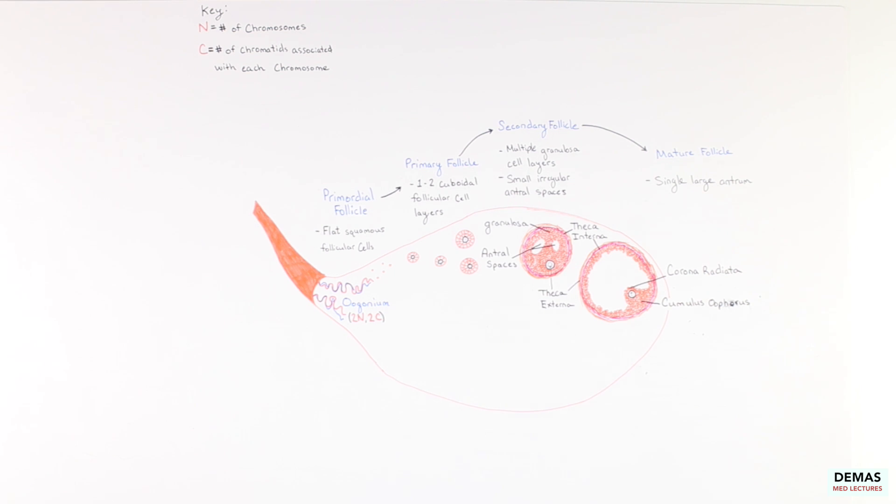During this entire process of follicle maturation, the oocyte remains within the primary oocyte stage of development. That means even though the follicle is progressing through these series of developmental stages, the oocyte remains in the primary oocyte stage as shown here.